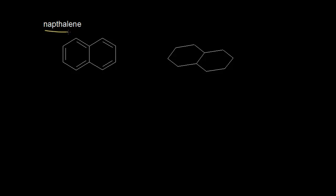Over here on the left, we have the dot structure for naphthalene. Naphthalene is a white solid that is traditionally the component of mothballs, so it has a very distinctive smell to it. Now, naphthalene is aromatic. However, it's not as stable as benzene, but we could think about it as two fused benzene-like rings.